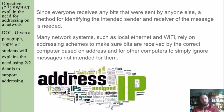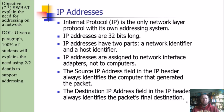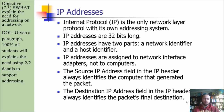There's a security piece to our addressing schemes. Here's a list of facts about IP addresses: IP is the only network layer protocol with its own addressing system — remember, there are different layers to our protocols. HTTP would be an application layer; IP is a network layer. IP addresses are currently 32 bits long, moving to IPv6. IP addresses have two parts: a network identifier and a host identifier. IP addresses are assigned to network interface adapters, not to computers. The source IP address in the IP header always identifies the computer that generated the packet; the destination IP address always identifies the packet's final destination.